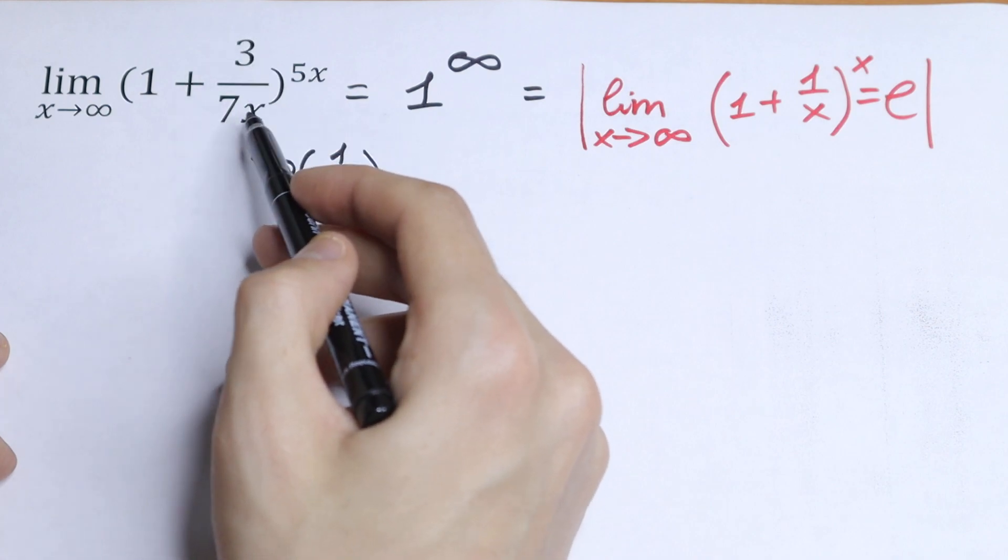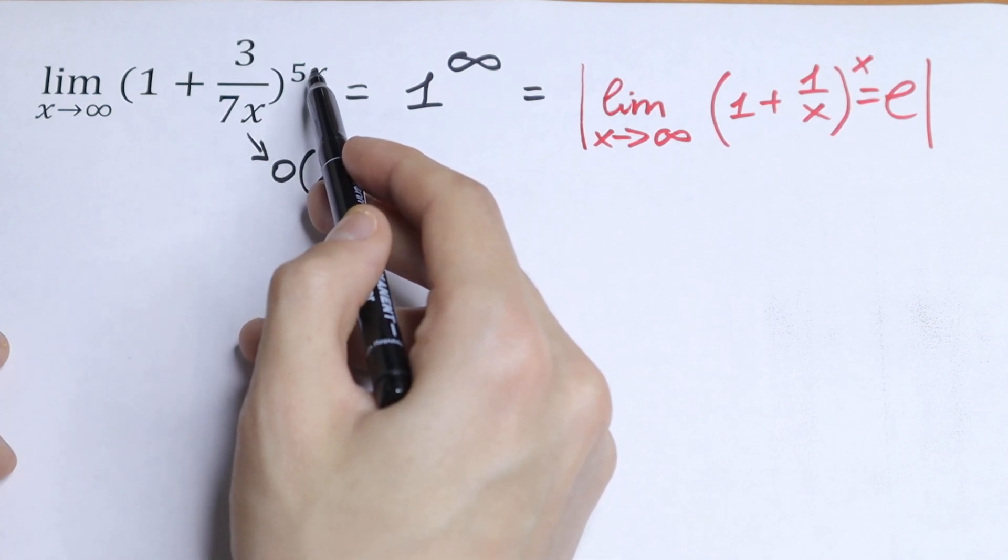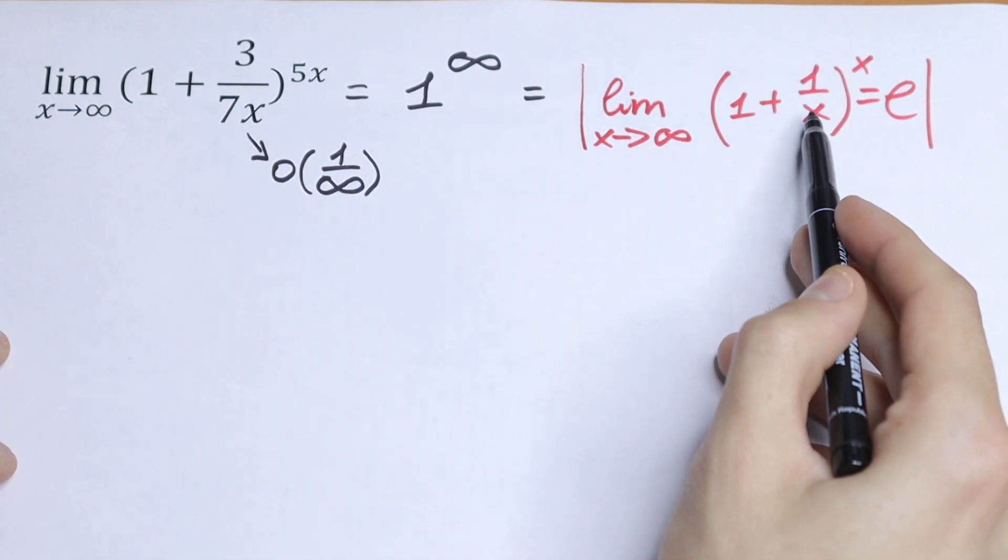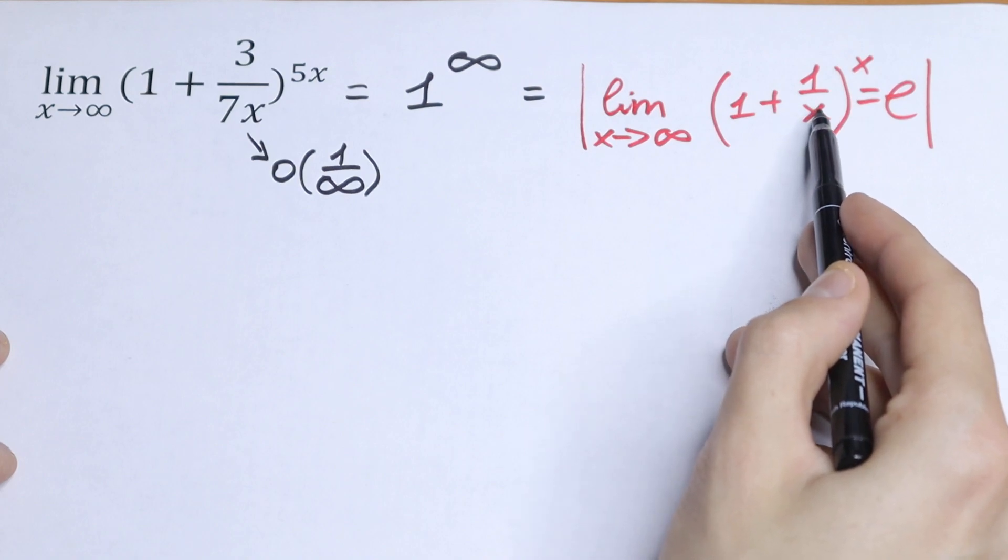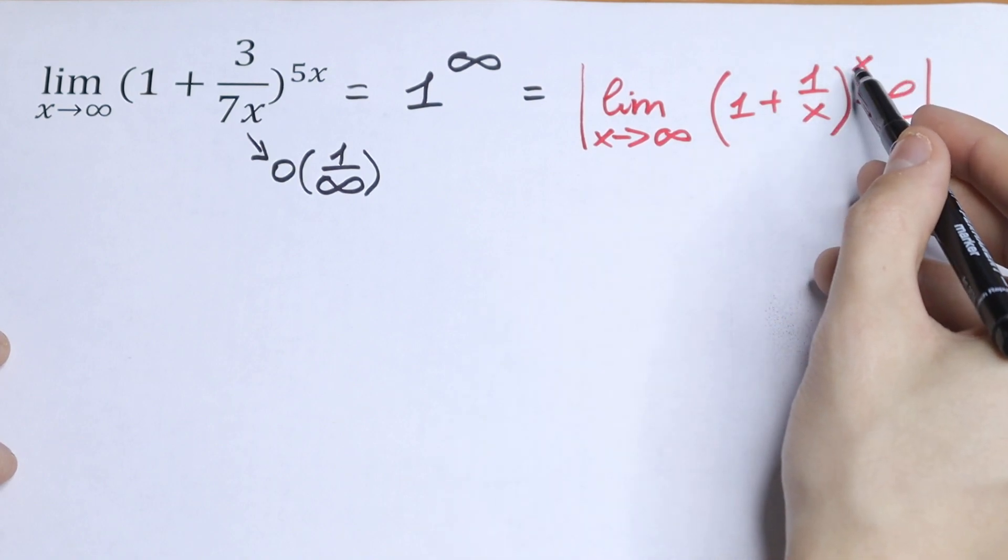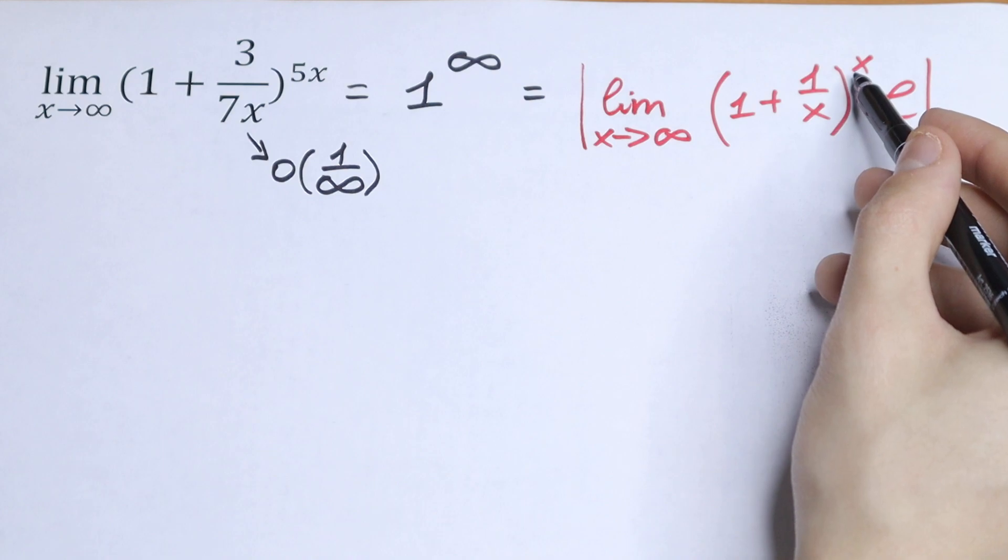How can we do this? We have 3 over 7x and we have 5x power. But we need 1 right here, we need the same. This in our denominator and the same power right here. How can we do this? Using a little bit of a trick.